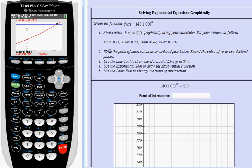The directions are to write the point of intersection as an ordered pair below, round the value of x to two decimal places. So down here in my point of intersection, I'm going to write left parenthesis. My x value to two decimals is 13.72, comma, the y value of course is 210, and then right parenthesis.